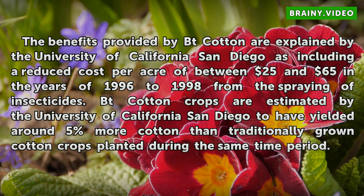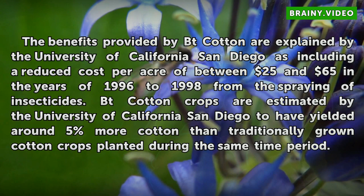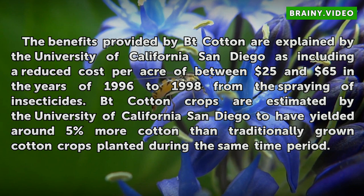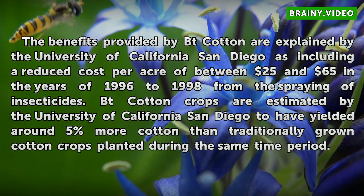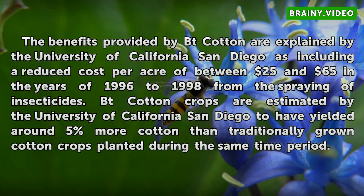Benefits. The benefits provided by Bt cotton are explained by the University of California San Diego as including a reduced cost per acre of between 25 and 65 dollars in the years 1996 to 1998 from the spraying of insecticides. Bt cotton crops are estimated by the University of California San Diego to have yielded around 5% more cotton than traditionally grown cotton crops planted during the same time period.